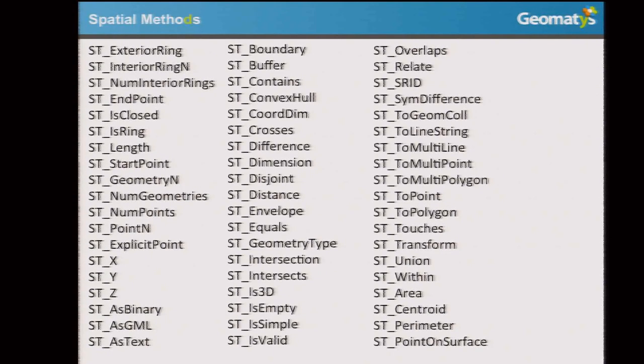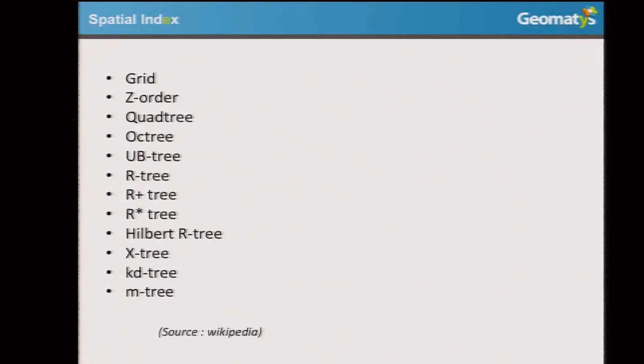The third component is the spatial index. There are a lot of different spatial indexes you can build. After some comparisons and implementations, we decided to implement the Hilbert R3 index, which is based on Hilbert curves. It's a bit slower for insertion, but it's really faster for retrieval of information. If I have internet access, I can show you a curve.